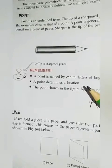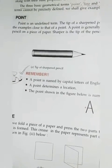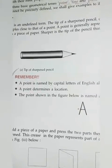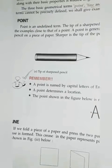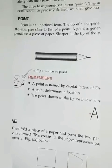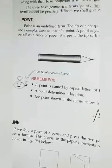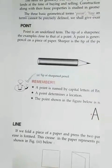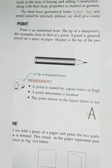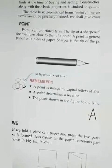Point is an undefined term. The tip of a sharp pencil, corner of a room, the tip of a compass are examples close to that of a point. A point is generally represented by putting a dot with a sharpened pencil on a piece of paper. Sharper is the tip of the pencil, thinner will be the dot.